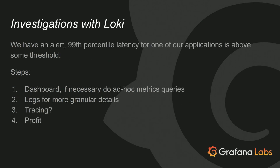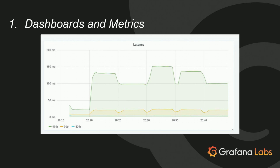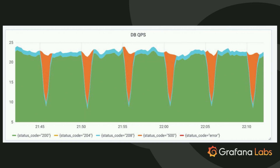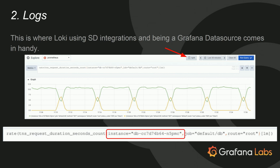Looking at the same investigation scenario as before — we're gonna have a dashboard, look at logs, and see how we can correlate our metrics data and logs data easily when we have Loki in place. Here we've got a dashboard for query latency, and we can see pretty bad tail latency at the 99th percentile. We can also see that whatever is happening started sometime around 20:20. Here we've got queries from our application to the database, and these orange spikes are actually 500 status codes being returned from the database to our application. Let's assume that our service retries when it gets a 500.